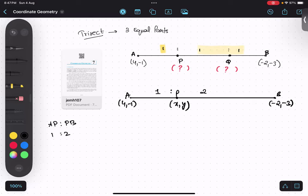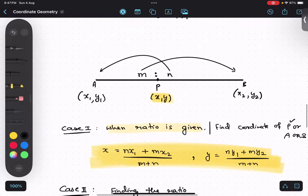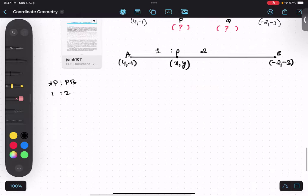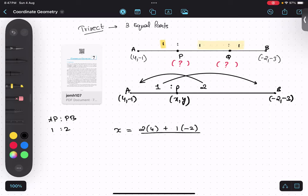Now use the section formula. For x, I will do the crisscross thing to find the value of x. So two bracket four plus one bracket minus two. Always write down the steps. At the bottom we will add the ratio, one plus two. So what is the answer for x? Eight minus two upon three. Answer is six upon three, that is two. So my x value is two.